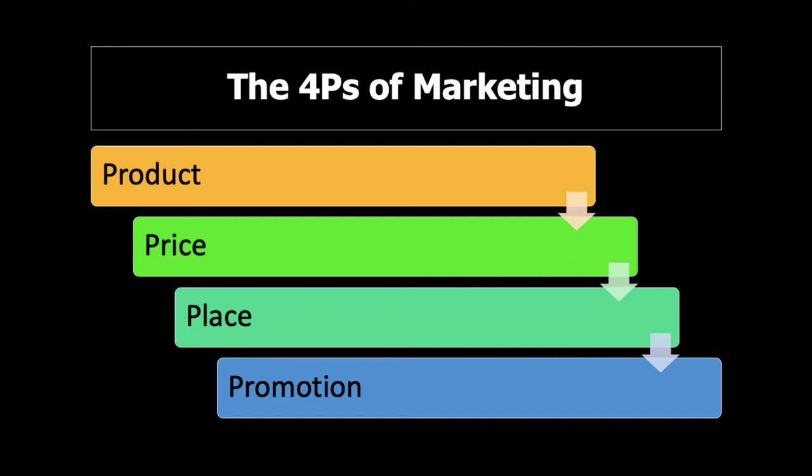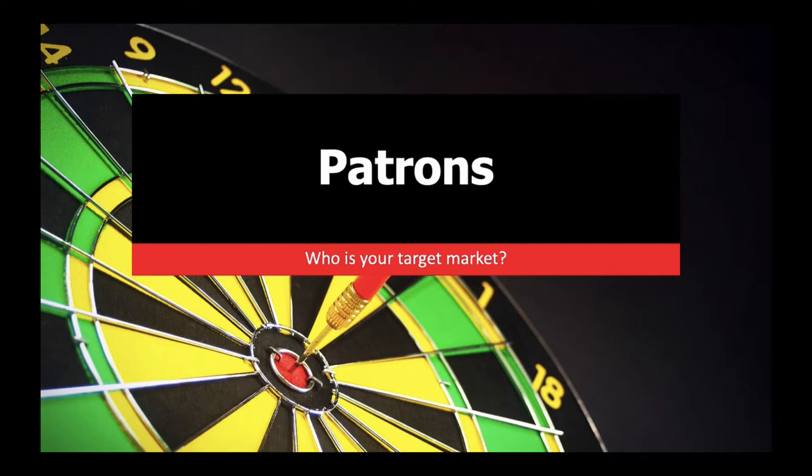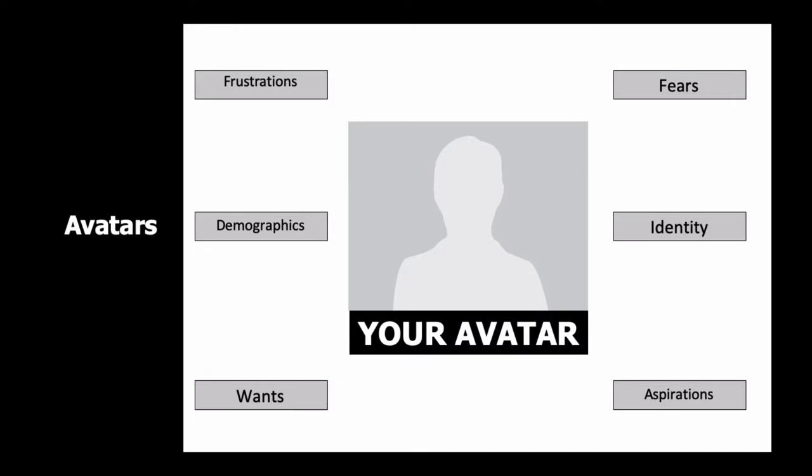The first three — product, price, and place — could be iterative. We may need to look at a product, price it, plan delivery, and then go back and say it won't work through that channel, or the price point is wrong. We might need to go around a few circles before we get it right. Then promotion comes last, but absolutely critical. The first step is to determine who your target market is — and the simple way to do this is what we call an avatar.